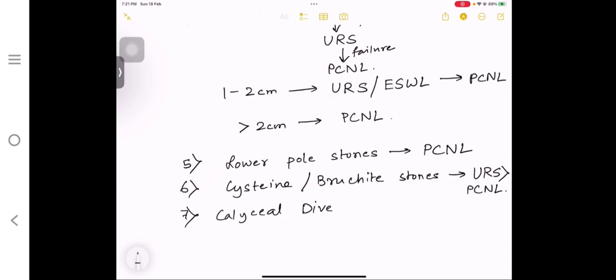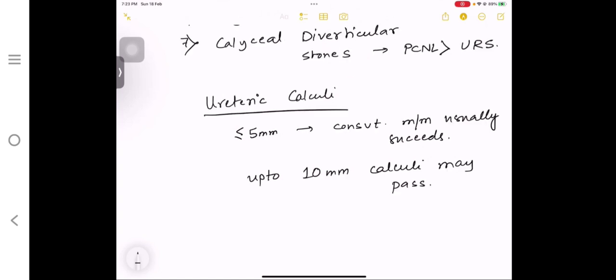Now we move to the treatment of the ureteric stones. If the size is less than or equal to 5 mm, then you do conservative management. Means if you have a stone in the ureter less than 5 mm, you have to do conservative management like NSAIDs and fluids.